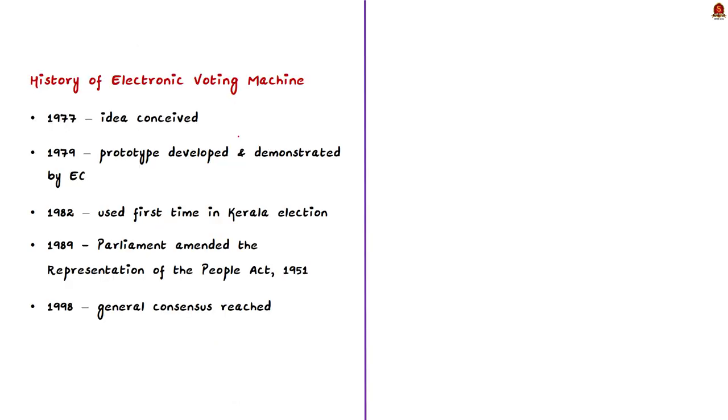First of all, let us see about electronic voting machines. Electronic voting machine is the replacement of the ballot box in the election process. The idea was first conceived in the year 1977. In 1979, a prototype was developed. And the first time use of electronic voting machines occurred in the general election in May 1982. But owing to the absence of specific law prescribing the use of EVMs, Supreme Court struck down the election. Subsequently, in the year 1989, the Parliament amended the Representation of the People Act 1951 to create a provision for the use of electronic voting machines.